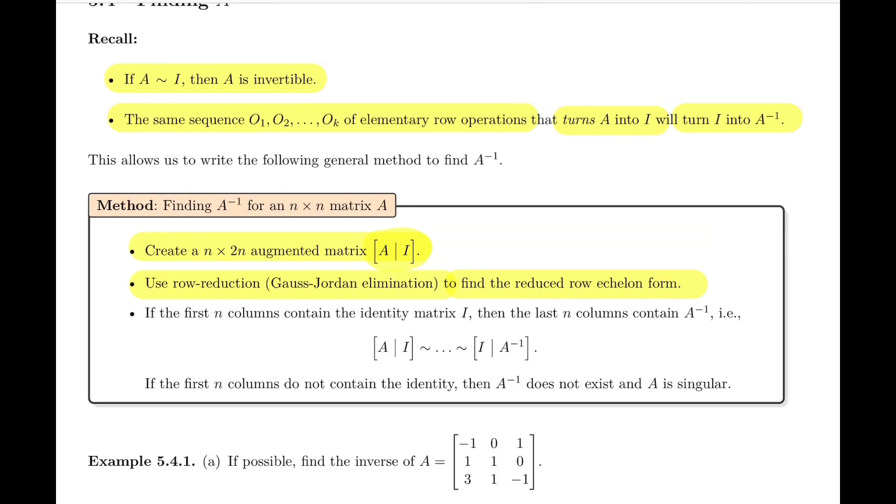Then we're going to look at what we have. If the first n columns have the identity matrix, then the last n columns will have A inverse. In other words, if A turns into I, then I will turn into A inverse.